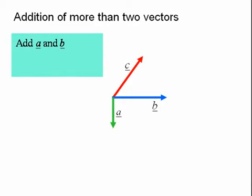We can start by adding any two of the vectors. Here we add vectors A and B by joining the tail of B to the head of A. The resultant of these is obtained by drawing from the tail of A to the head of B. We shall call this resultant D.